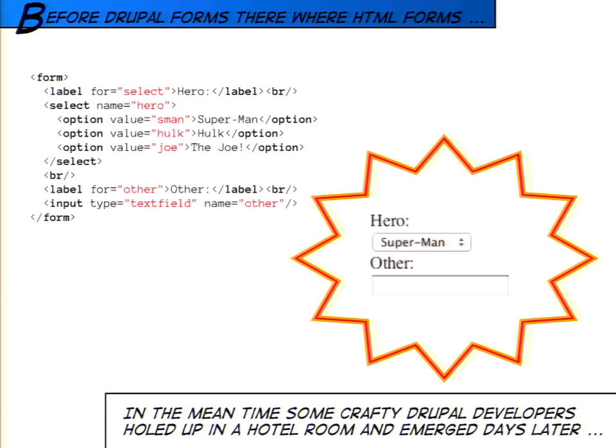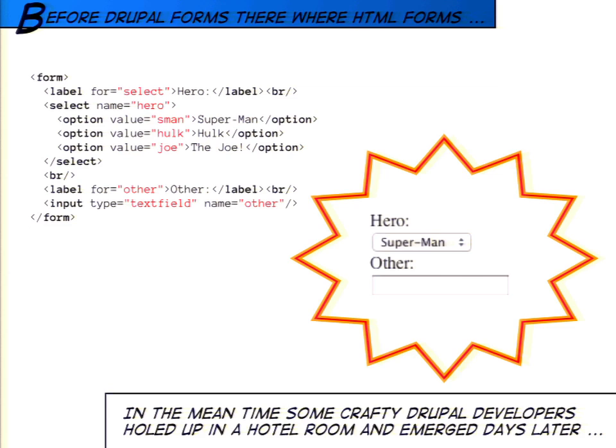Forms allow people to interact with our site. However, HTML forms on their own are pretty complicated and really prone to developers making mistakes when creating them. This is why the form API exists — the form API exists because forms, on their own, are really hard to make secure. There's a lot of things you have to take into account when you're letting people type something into a text field and then submit it to your server.